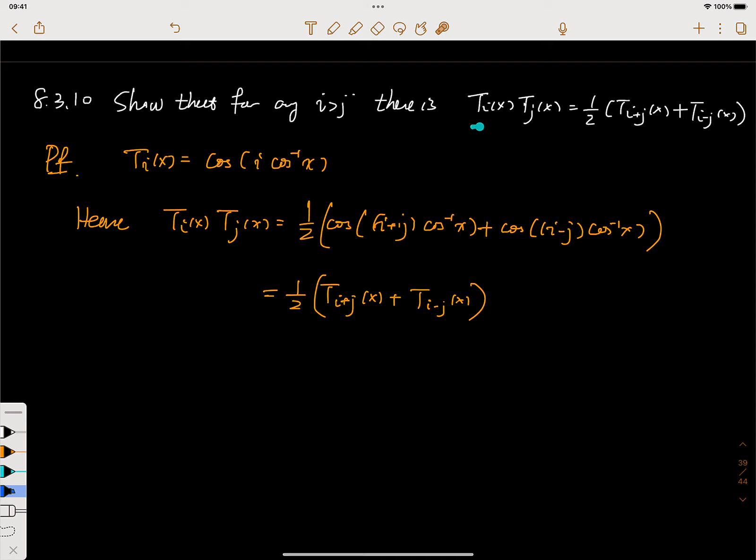Remember that T_i(x) is just defined to be cosine of i times cosine inverse of x. This is just some angle, let's say this is some angle y, so it's just cosine i times y. What we have here is the cosine of iy and the cosine of jy.